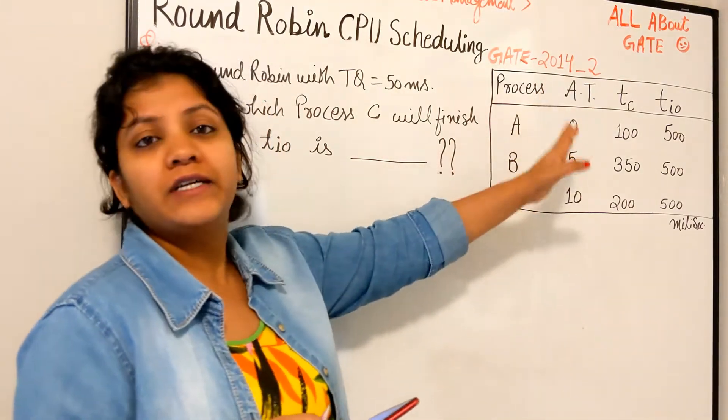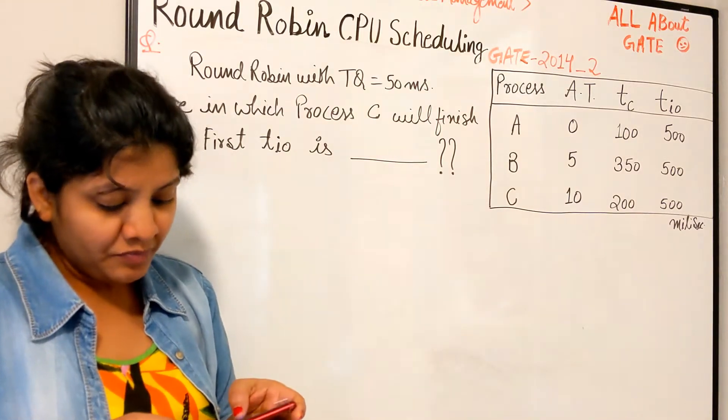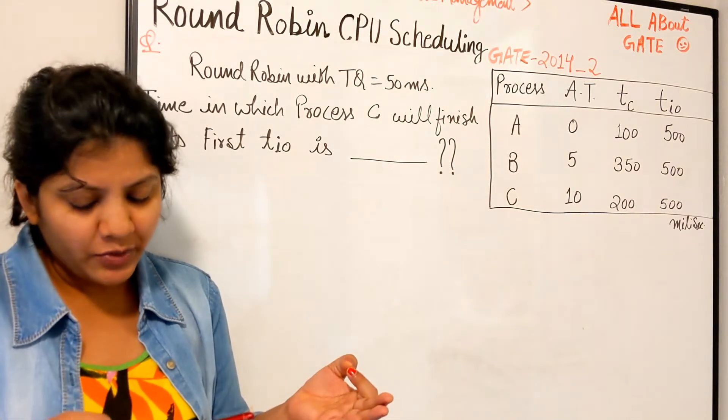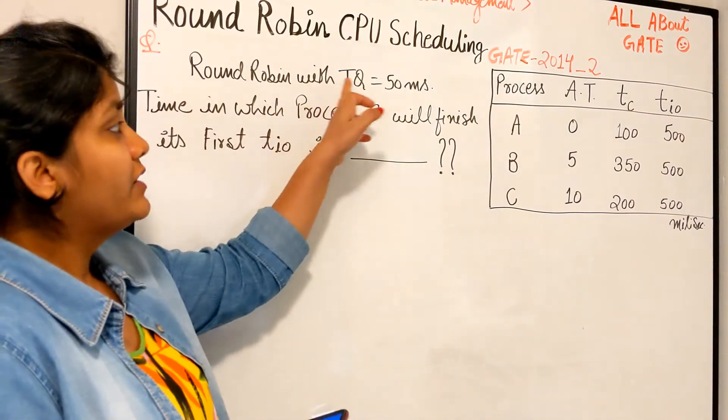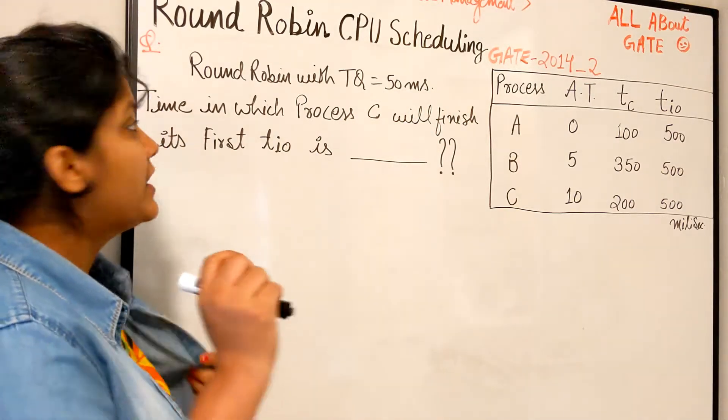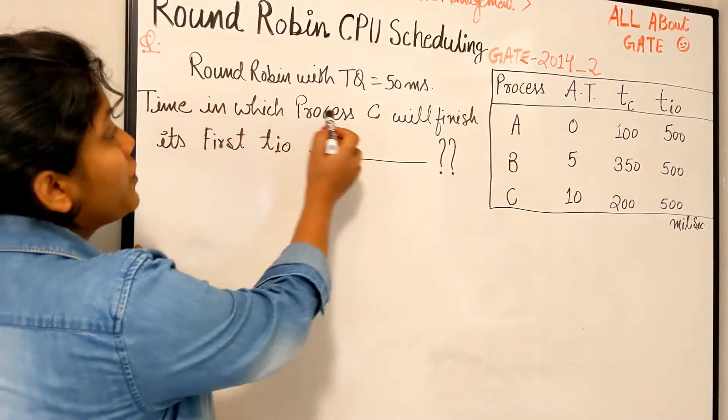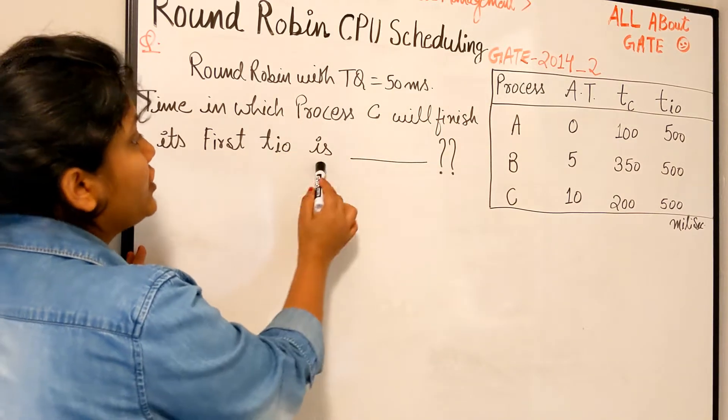Which I have considered as the arrival time. In a pure time-sharing system, that means the round robin scheduling algorithm that uses a time slice of 50 milliseconds. So round robin with time quantum of 50 milliseconds. The question is asking one simple thing: time in which process C will finish its first input-output operation is, and it's a numeric-based question. There are no options given.